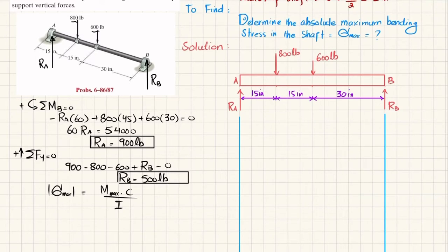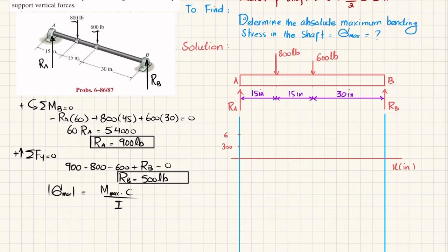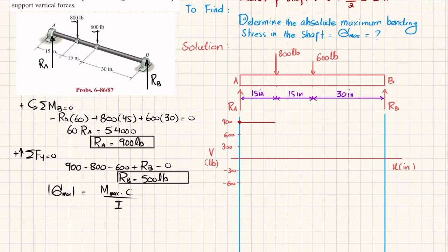X will be in inches. Let each division be 300, so 300, 600, 900 for shear force in pounds, and minus 300, minus 600 on the negative side. At point A, R_A equals 900, so the first point is 900. Moving from point A to the 800-pound load, there is no other force, so shear force remains the same.